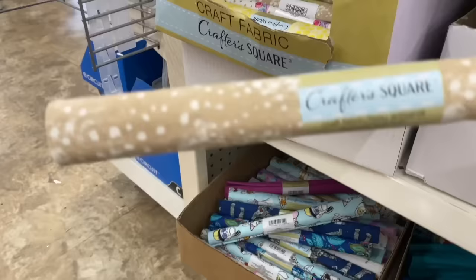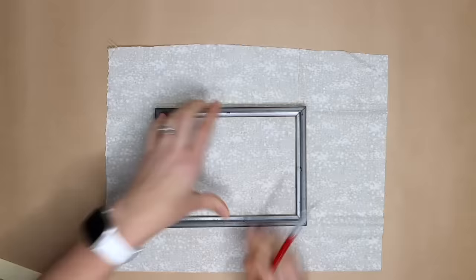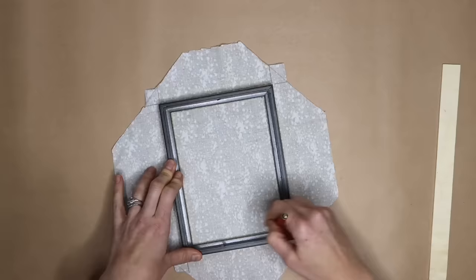Head to Dollar Tree and pick up fabric, flip the frame on the back side of a piece of fabric, draw horizontal and vertical lines off the four corners of the frame. Create boxes the same depth of the frame from these marks.